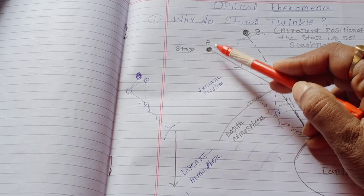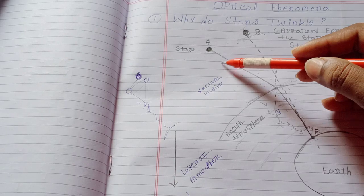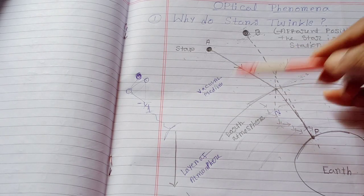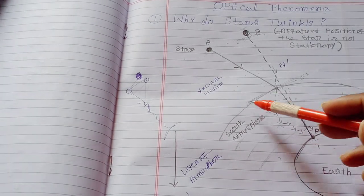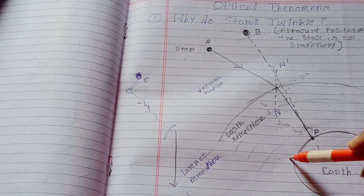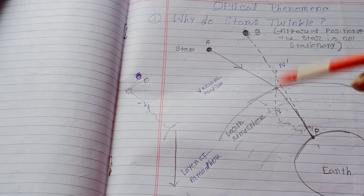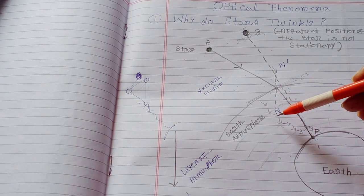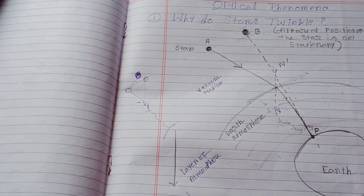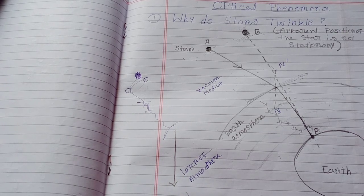Student, just have a look at this point. Here I am representing A as a luminous object, that means a star. This medium is vacuum medium. In outer space, vacuum medium exists. And this medium is representing Earth's atmosphere, which is a denser medium. As you know, the speed of light in vacuum is high, whereas the speed of light in denser medium is low, because in vacuum medium air resistance is low and in denser medium air resistance is high.